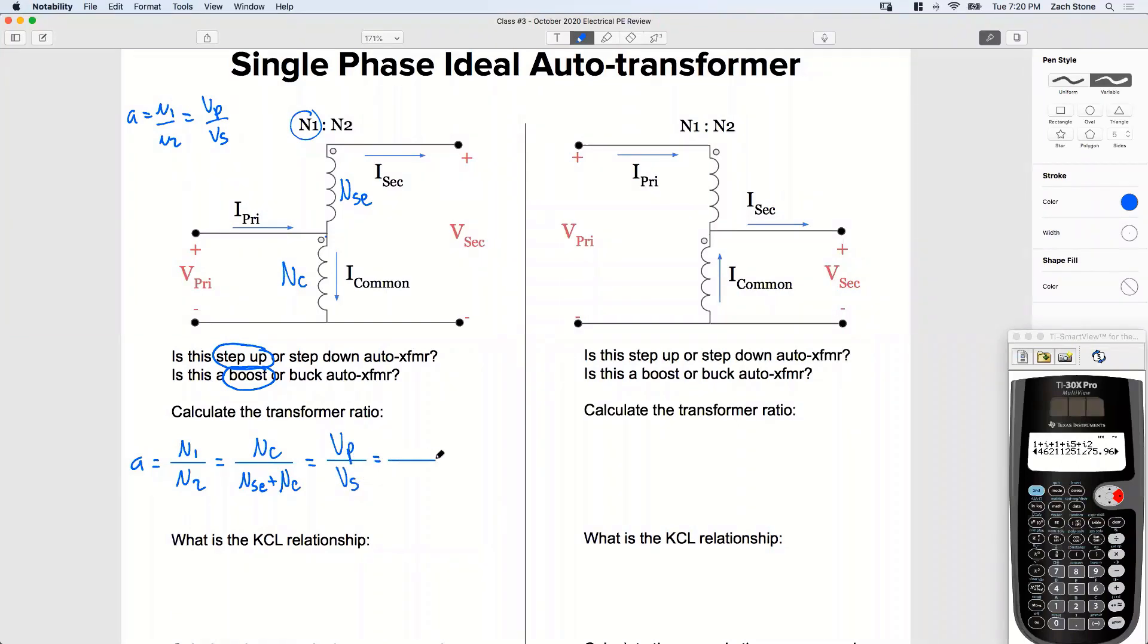What about the current relationships? Here's how I remember this. When I'm comparing my turns, the voltages match. Primary turns, primary voltage, secondary turns, secondary voltage. But I just remember that the current is flip-flopped.